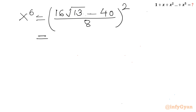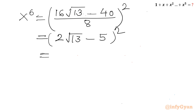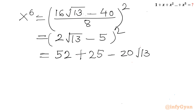Now I can divide the numerator by 8, so it will become (2 root 13 minus 5) whole squared. Now using the (a minus b) squared formula: a squared is 4 times 13, which is 52, plus b squared 25, minus 2ab which is 20 root 13. So x to the power 6 will become 77 minus 20 root 13.